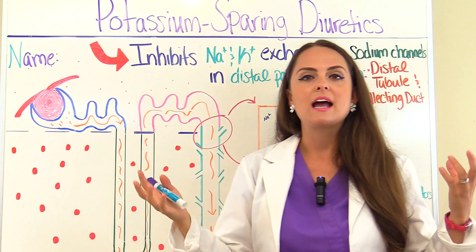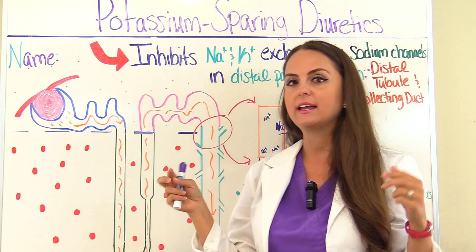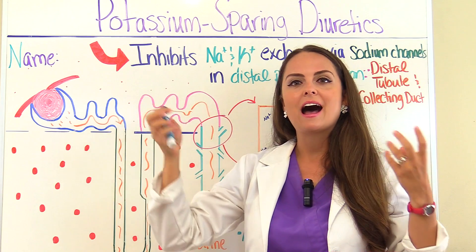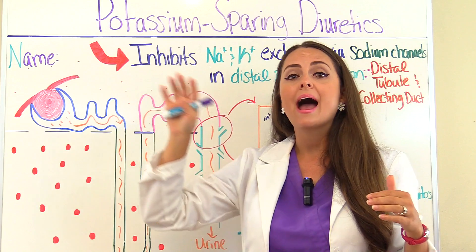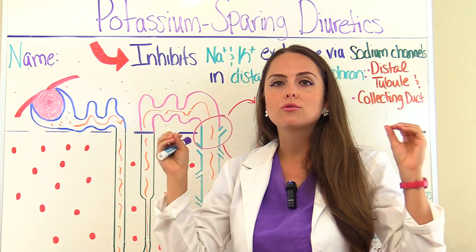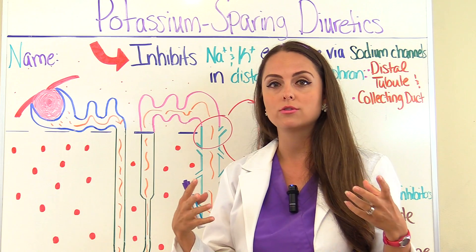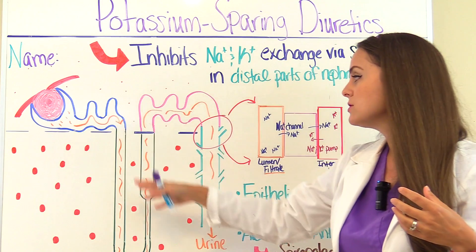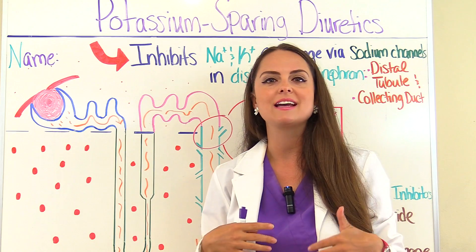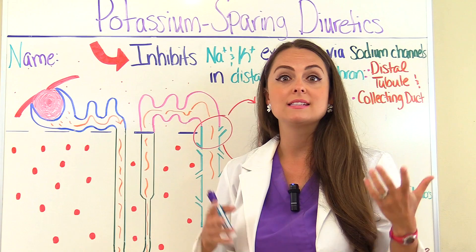Each part of the nephron is assigned its own role for tweaking that filtrate. What's going to happen to the filtrate — which will eventually become urine — is that it's either going to take ions and water and put it back into the blood, which we call reabsorption, or the blood is going to secrete things it doesn't need into the filtrate so they can be excreted. Your nephron is essentially maintaining homeostasis of your fluid, electrolytes, water, and waste in the blood.